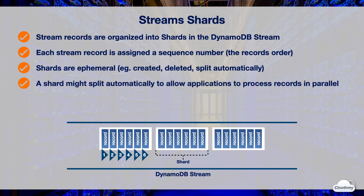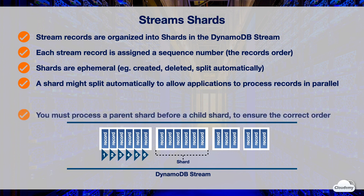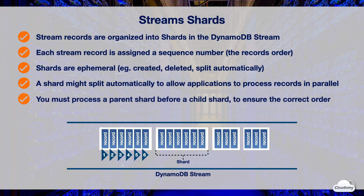When there are high write activities on a table, more records are published to the stream, and a shard might split automatically to allow applications to process records in parallel. Shards in the stream have a parent-child relationship. You must always process the parent shard before the child shard to ensure stream records are processed in the correct order.